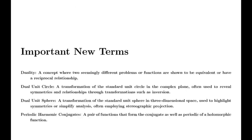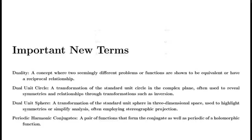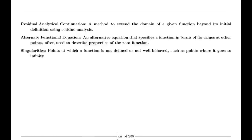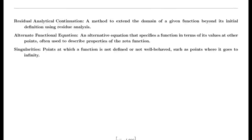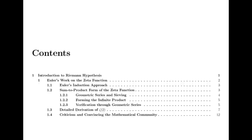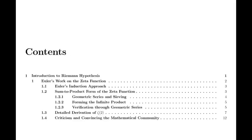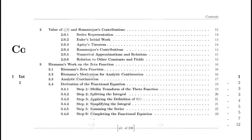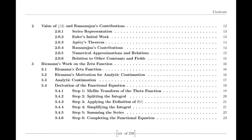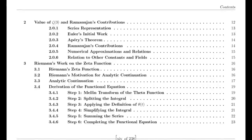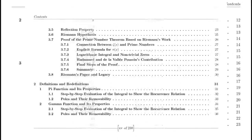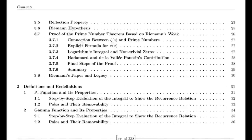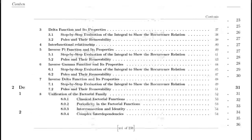Moving to the 19th century, we encounter Bernhard Riemann, who expanded our understanding of complex functions. Riemann introduced the concept of analytic continuation, which allowed for the extension of functions beyond their initial domains. For example, he extended the Riemann zeta function — initially defined only for complex numbers with real parts greater than 1 — to the entire complex plane, except for s = 1, where it has a simple pole. This was a crucial advancement in complex analysis.